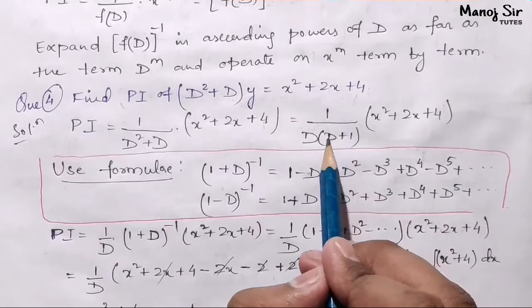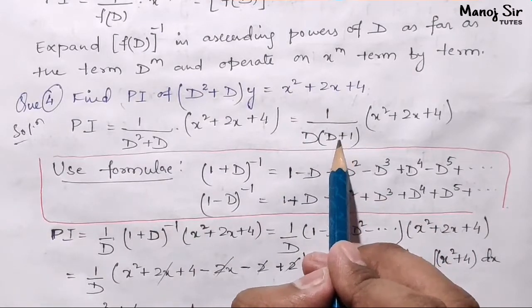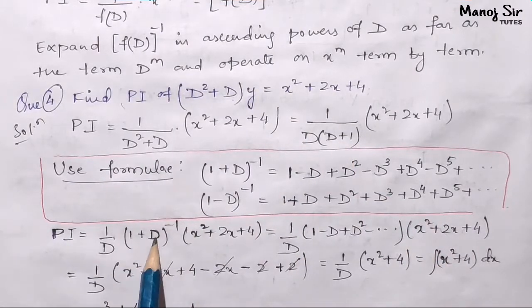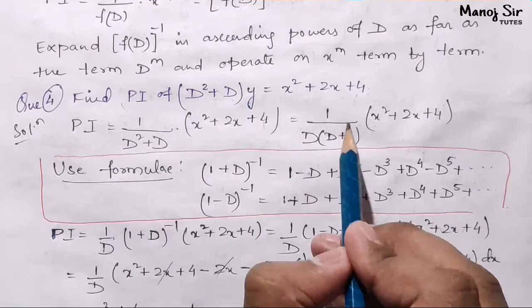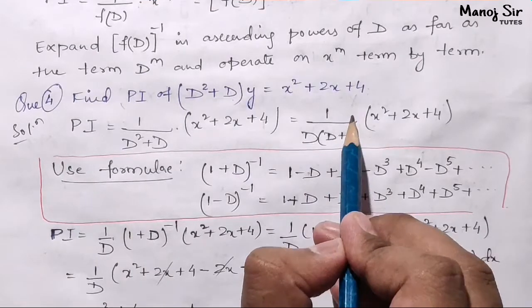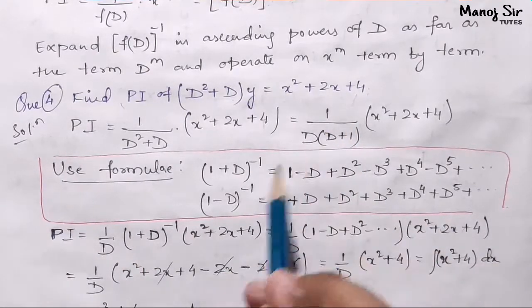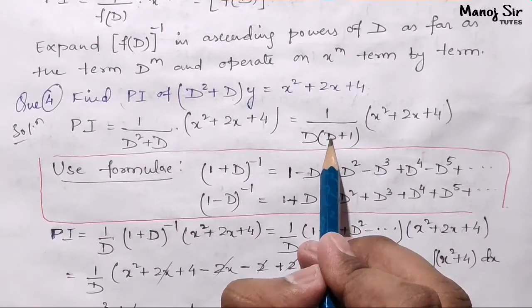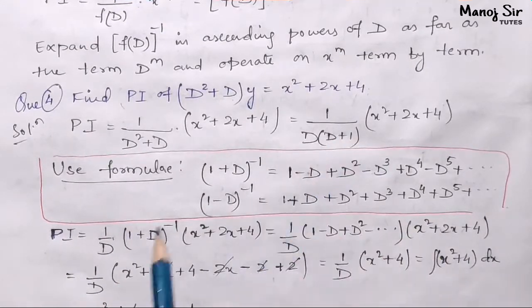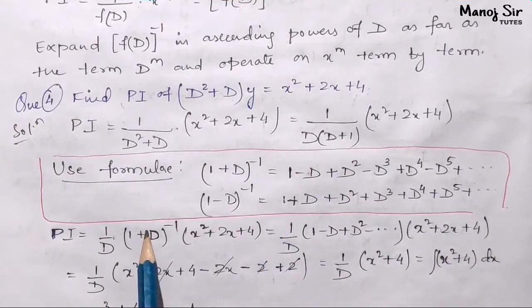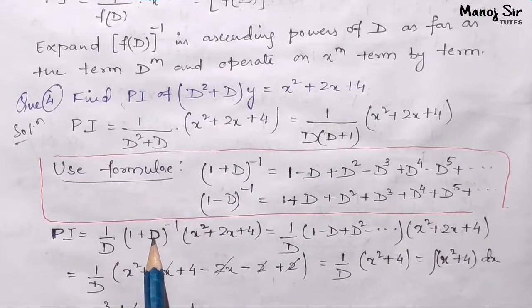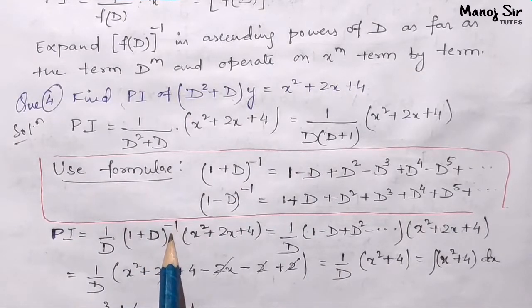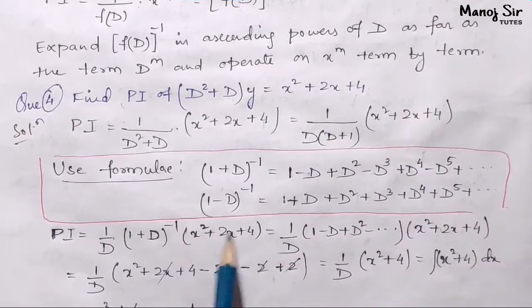Since we have to write this in ascending powers of D, we need to write 1 first, then D. Taking (D + 1) to the numerator part — that is 1 upon D — this becomes 1 upon D times (1 + D) to the power minus 1.